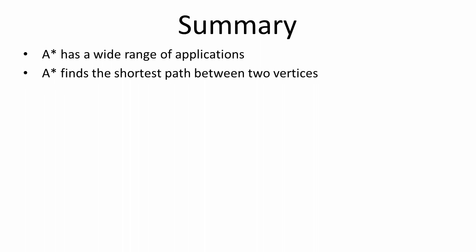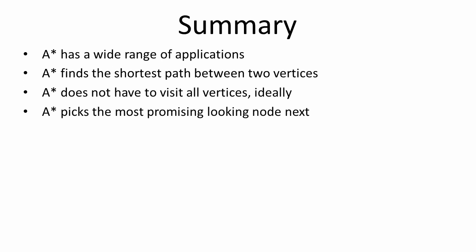To summarize then, the A-star pathfinding algorithm has a wide range of applications. The A-star algorithm finds the shortest path between two vertices. A-star doesn't have to visit all of the vertices, ideally. A-star picks the most promising looking node next. The better the heuristic, that's the H value, the quicker that A-star will find the path it's looking for.